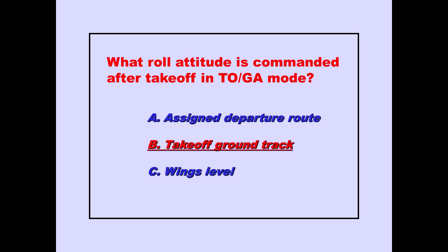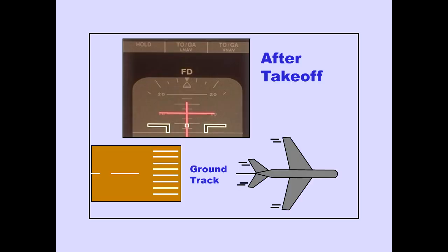Answer B is correct. The flight director commands a heading to maintain the ground track which existed during the takeoff.